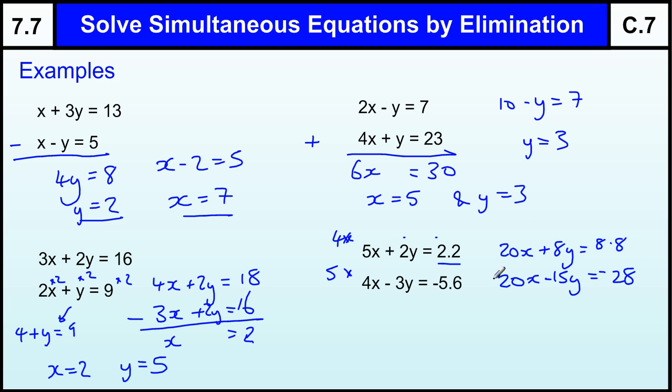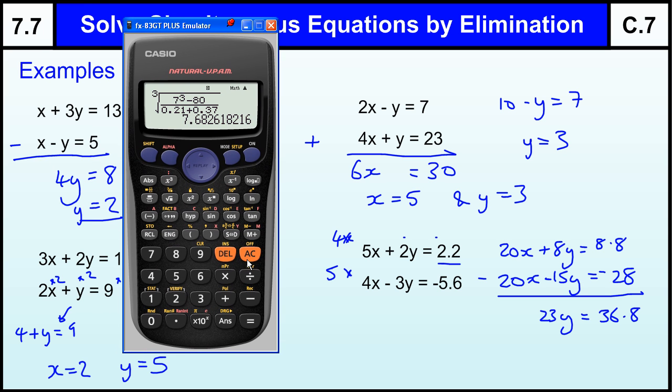Now we can subtract the two equations. I am just going to do it as they are written. 20X take away 20X is nothing. 8Y minus minus 15 is the same as adding 15, and 8 plus 15 is 23Y. 8.8 minus minus 28 is going to be 36.8. I am going to have to bring in the calculator here. I am guessing this is going to be relatively nice. Let us just use the calculator. 36.8 divided by 23 is 1.6. So Y equals 1.6.